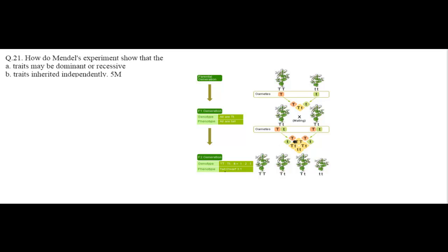How do Mendel's experiments show that traits may be dominant or recessive, and that traits are inherited independently? Mendel is known as the father of genetics, and he chose pea plants for his experiments.